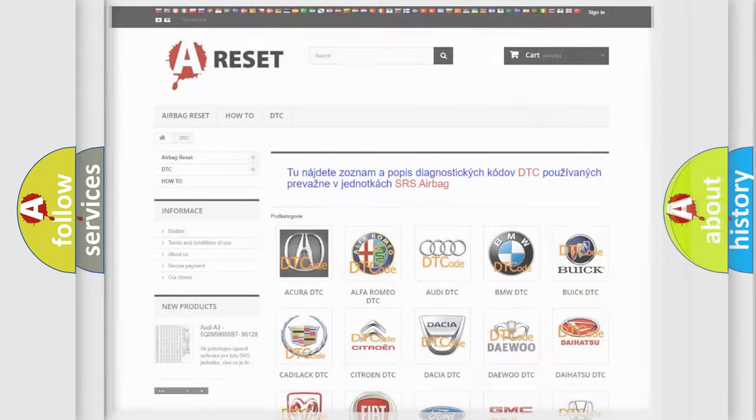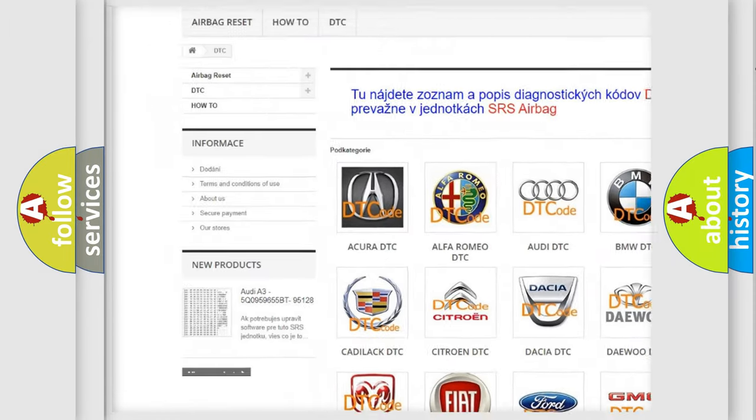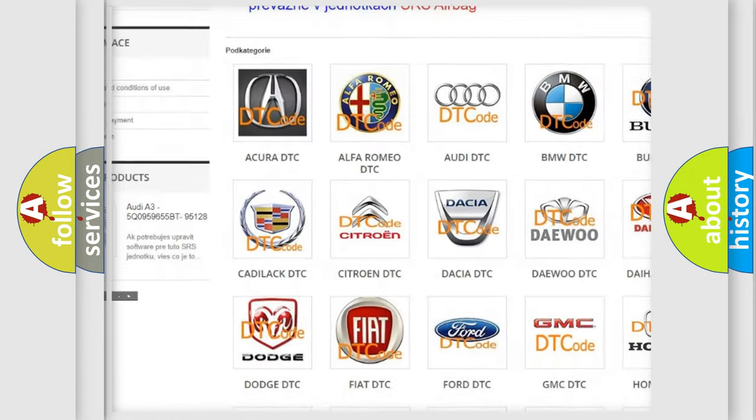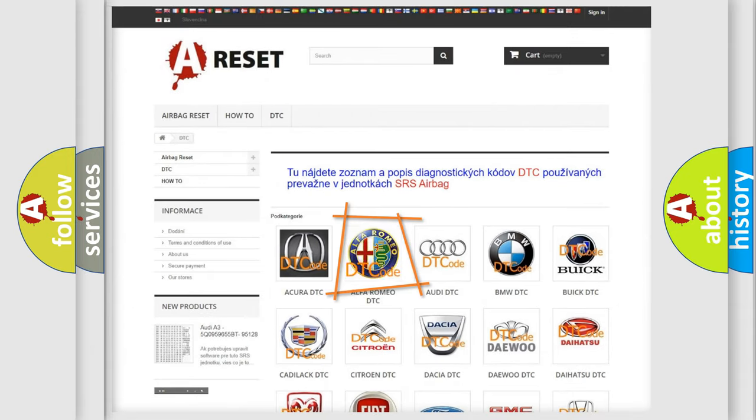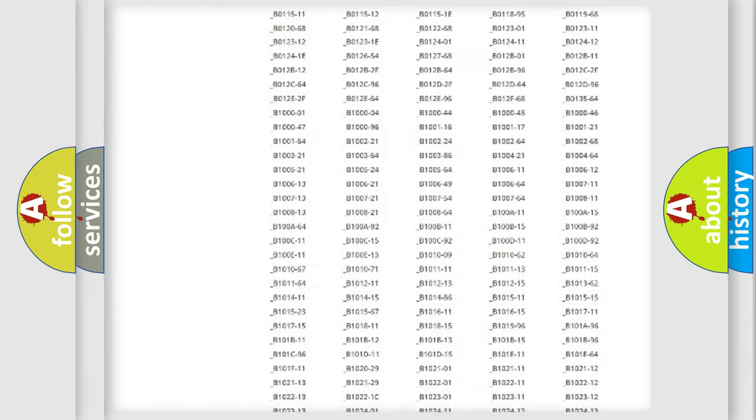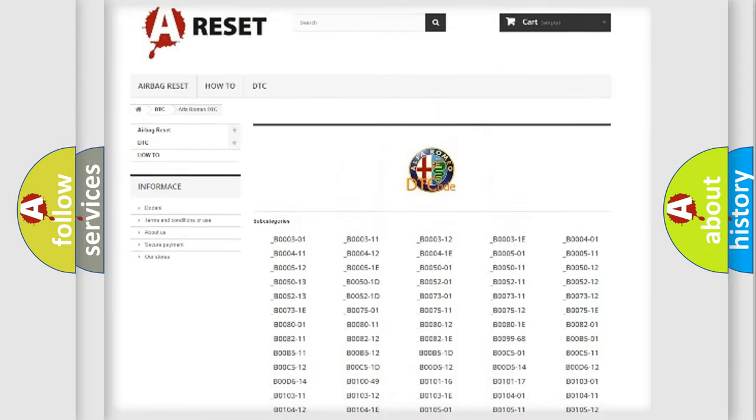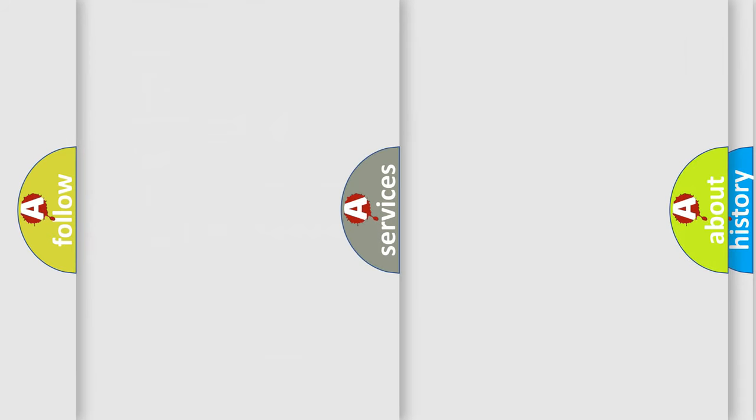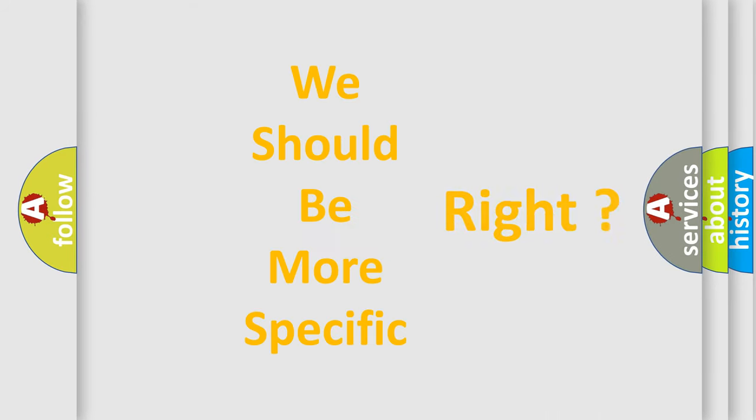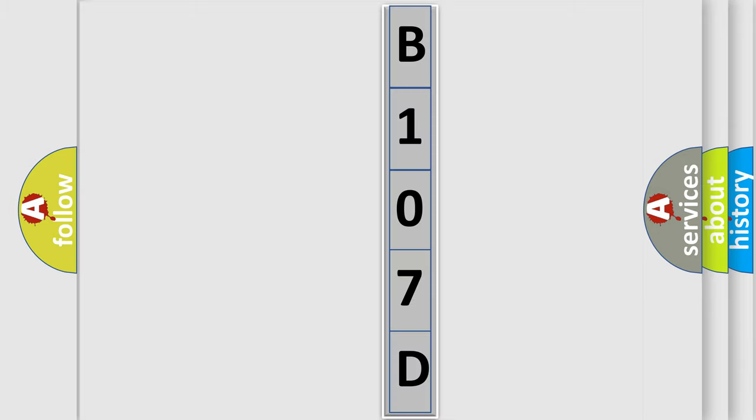Our website airbagreset.sk produces useful videos for you. You do not have to go through the OBD2 protocol anymore to know how to troubleshoot any car breakdown. You will find all the diagnostic codes that can be diagnosed in Alfa Romeo vehicles, and many other useful things.